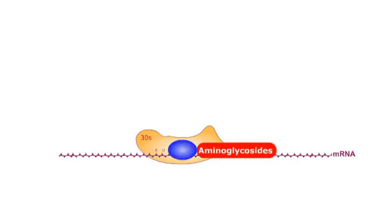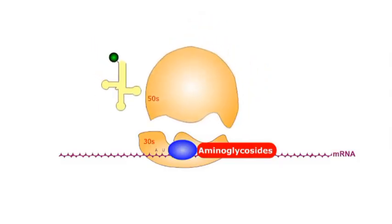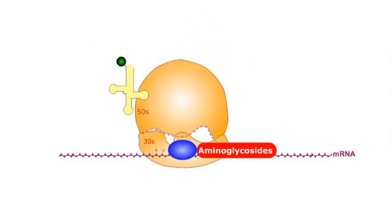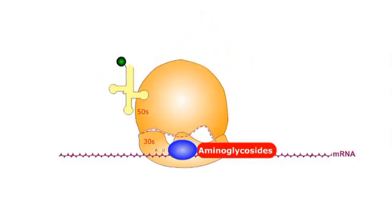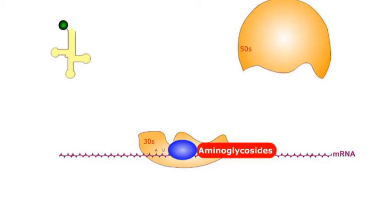Aminoglycosides bind to the 30S subunit and distort it. This distortion of the 30S subunit inhibits the binding of the 50S to the 30S subunit and halts the formation of a 70S ribosomal complex.